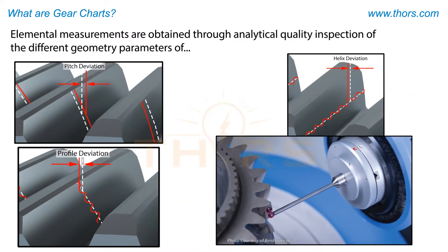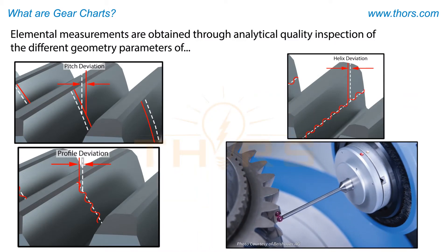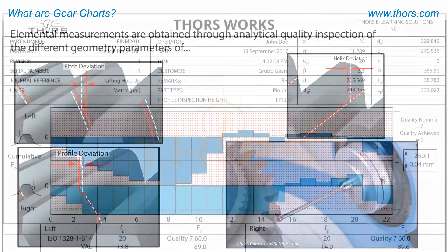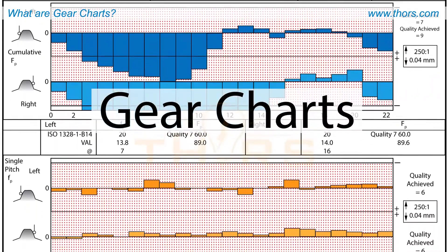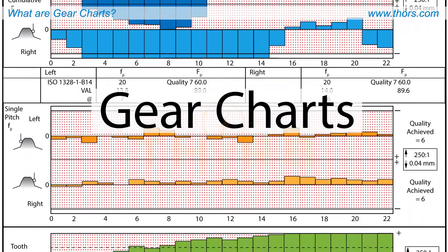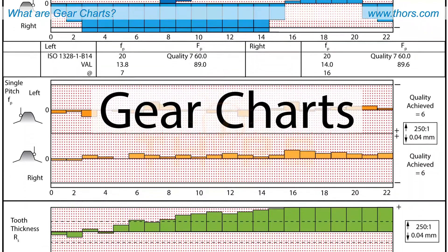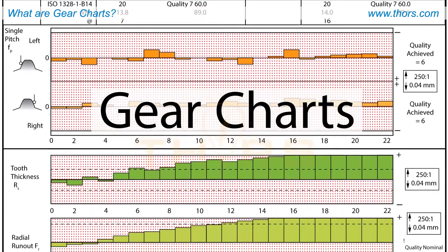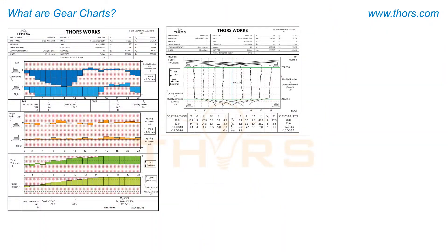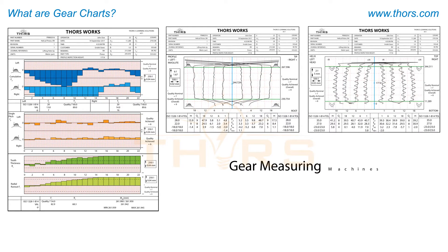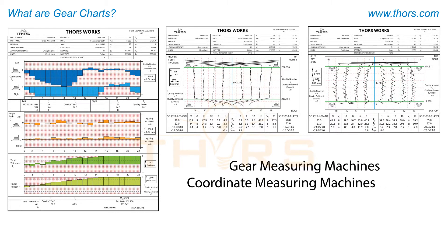The measured deviations are then evaluated according to the standard, and the worst one determines the accuracy grade. The gear inspection reports, or simply gear charts, provide a visual representation of how the gear tooth geometry differs from the intended design.